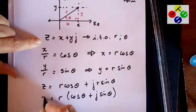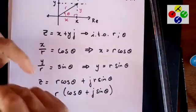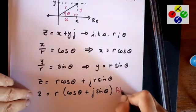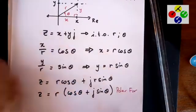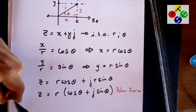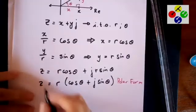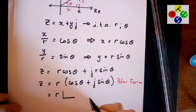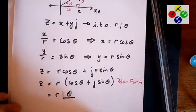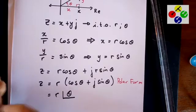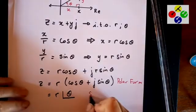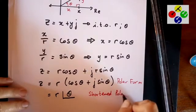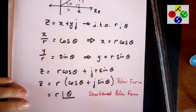And this is what we call polar form. That is called polar form. And there's a shorthand for this. You can write it as R angle theta. And this is called shortened polar form.